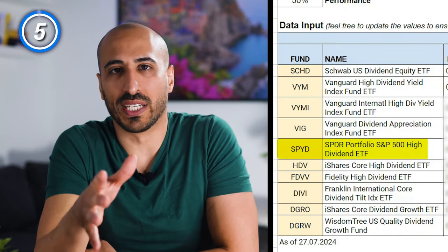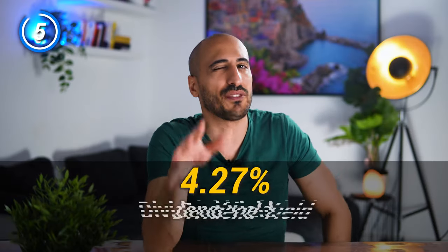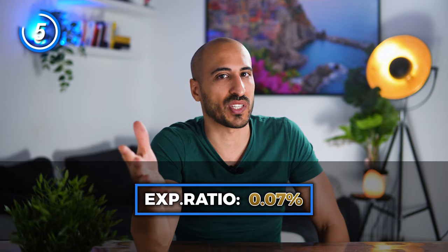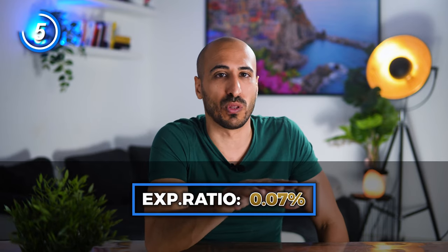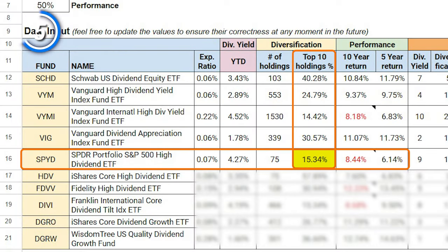Next up is SPYD, the SPDR S&P 500 High Dividend ETF. SPYD has a dividend yield of 4.27%, an expense ratio of 0.07%, and the lowest number of holdings in this list with just 75 positions. The top 10 holdings weigh 15.34% of the portfolio. SPYD delivered an average annual return of 8.44% in the last 9 years — not 10, because inception was 9 years ago — and 6.14% in the last 5.